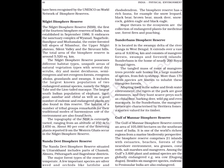The Gulf of Mannar Biosphere Reserve covers an area of 1,05,000 hectares on the southeast coast of India. It is one of the world's richest regions from a marine biodiversity perspective. The Biosphere Reserve comprises 21 islands with estuaries, beaches, forests of the nearshore environment, seagrasses, coral reefs, salt marshes and mangroves. Among the species, 3600 plant and animal species include globally endangered ones, e.g. the sea cow or dugong. Besides, 6 mangrove species endemic to peninsular India are also endangered.